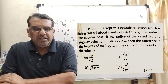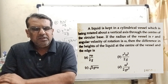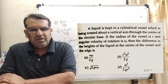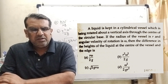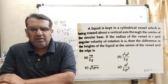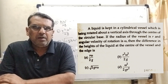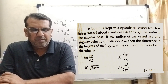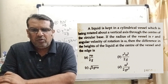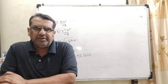Now here is the question: A liquid is kept in a cylindrical vessel which is being rotated about a vertical axis through the center of the circular base. If the radius of the vessel is small r and angular velocity of rotation is omega, then the difference in the heights of the liquid at the center of the vessel and the edge is — Option A: r·omega upon 2g; Option B: r²·omega² upon 2g; Option C: root(2g·r·omega); Option D: omega²/(2g·r²). This question was asked in MHT-CET 2010.